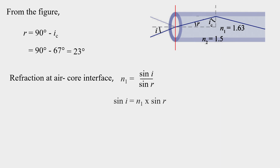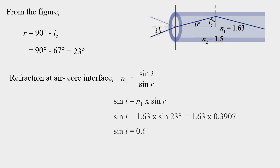Using Snell's law at the air-core interface: N1 times sine of A equals the result. N1 is 1.63 and the angle is 23 degrees. Sine equals 0.6368.